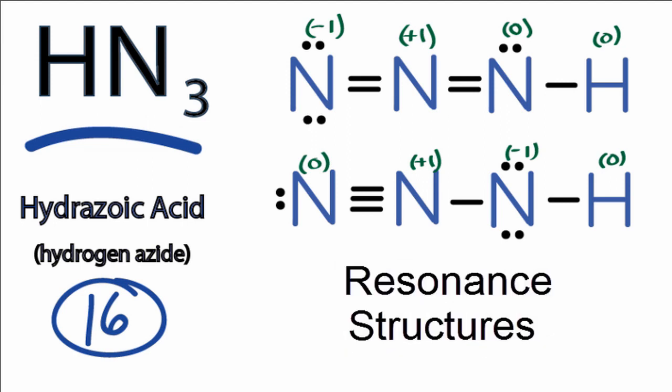The actual structure for HN3 is going to be somewhere between these two Lewis structures here that we've drawn. So in a sense they're both correct, but the actual molecule in the real world will be a combination or a mixture of these two Lewis structures for HN3.